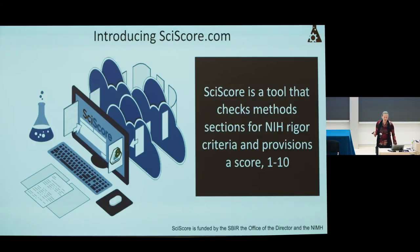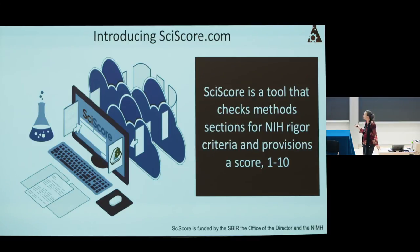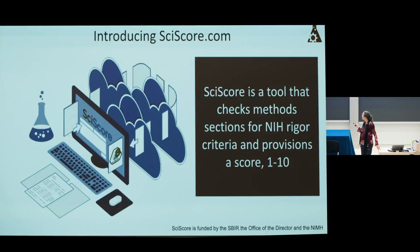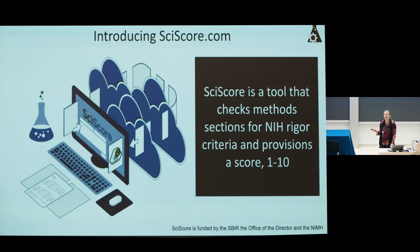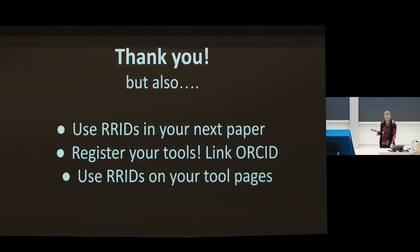Looking at some future directions: I did mention SciScore. SciScore has now been released to the public — it's a commercial tool funded through the SBIR mechanism out of the Office of the Director and NIMH. SciScore finds your cell lines and also finds a lot of other information about where RRIDs ought to be. It finds NIH and journal rigor criteria — if you've missed the fact that you've done blinding, or if you haven't done blinding, it will detract a point from your score. It also produces a score that we may use to create a reproducibility index.